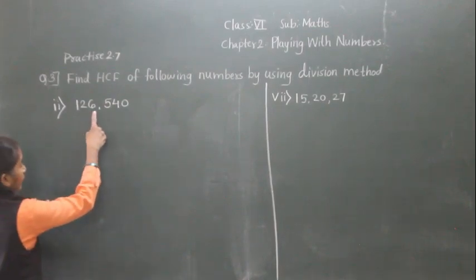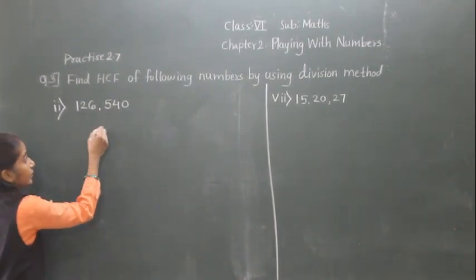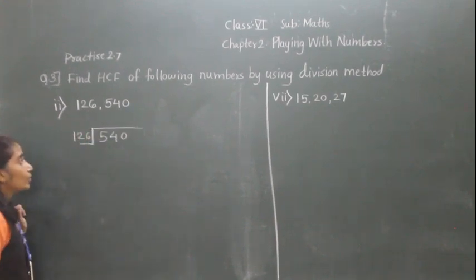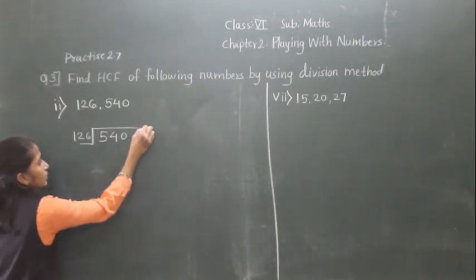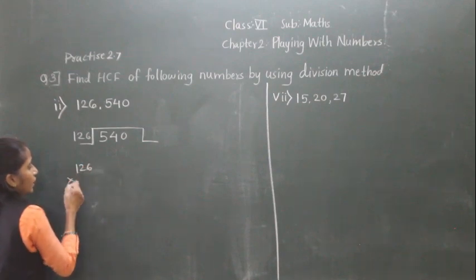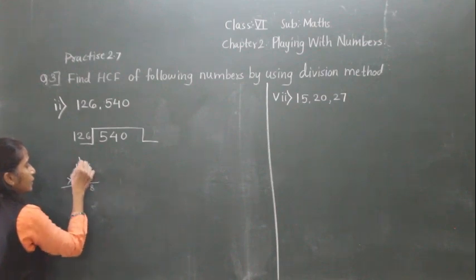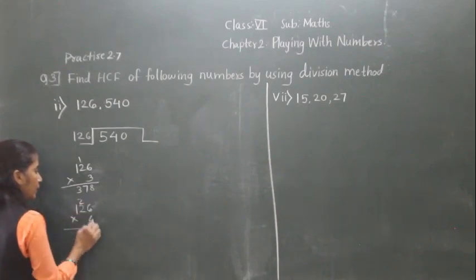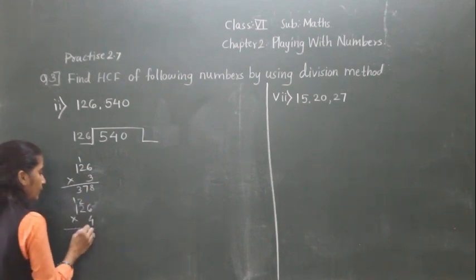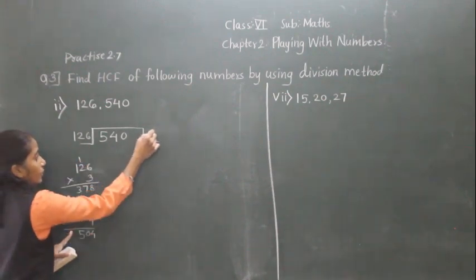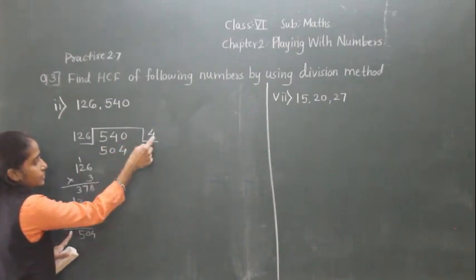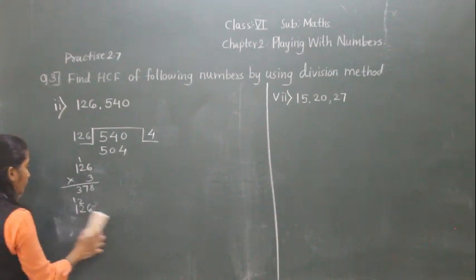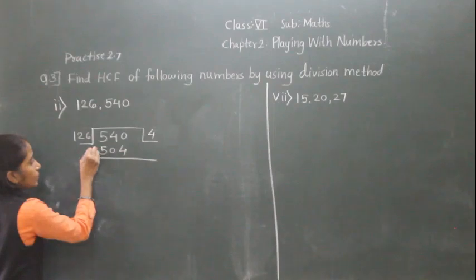Let's solve the next example. The numbers are 126 and 514. Now which is the greater number? 514. So the greater number is divided by the smaller number, which is 126. 126 fours are 504 — we check: 4 times 126 is 504. So 514 divided by 126 gives quotient 4 and we do the subtraction. 514 minus 504 is 10, so the remainder is 10.